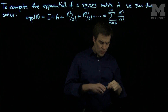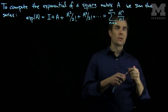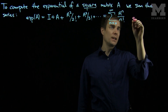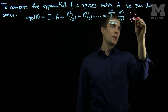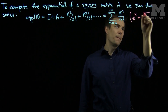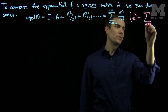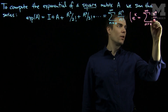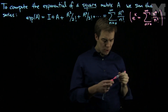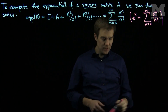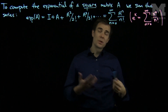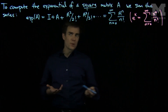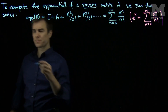We should recall that this looks very similar to the definition of the Taylor series of e to the x. Recall that e to the x is the sum n goes from 0 to infinity of x to the n over n factorial. So to compute the exponential of a matrix, I make the analogy with the Taylor expansion of e to the x. Let's see a few examples of how we compute these exponentials.